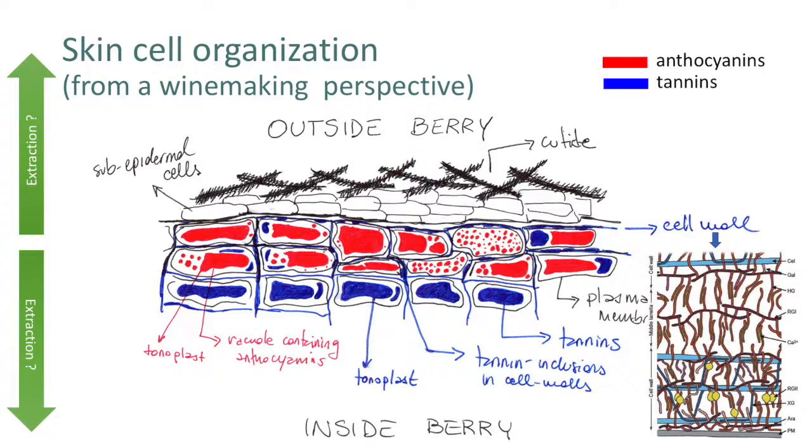Just below that, we see a couple of cells, but after this subepidermal cell, we start seeing between three and seven layers of cells that contain the compounds that we want to extract. In red, you see anthocyanins. In blue, you see tannins, and they are essentially contained in vacuoles. The membrane of the vacuole goes by the name of tonoplast. After that, we have the membrane of the cell, and after that, we have the cell wall.